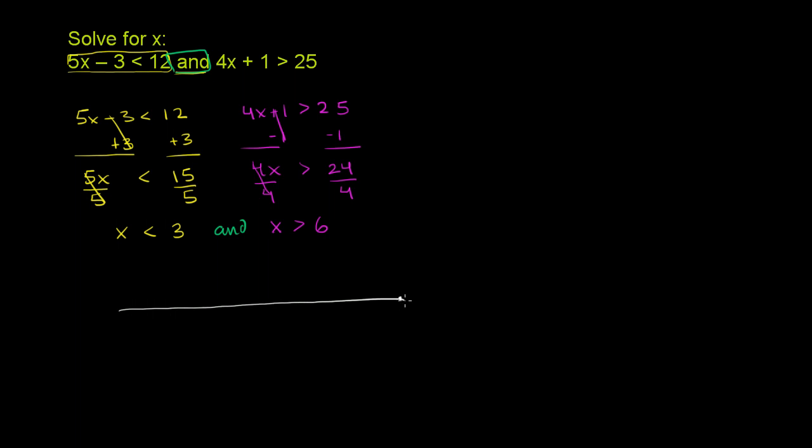This first constraint says that x needs to be less than 3. So this is 3 on the number line. We're saying x has to be less than 3, so it has to be in this shaded area right over there.